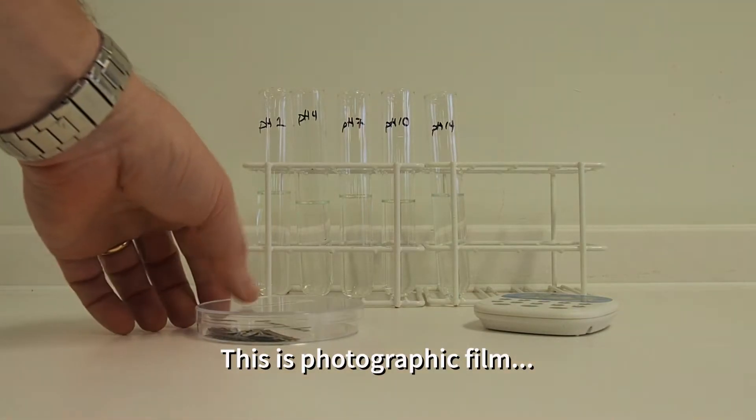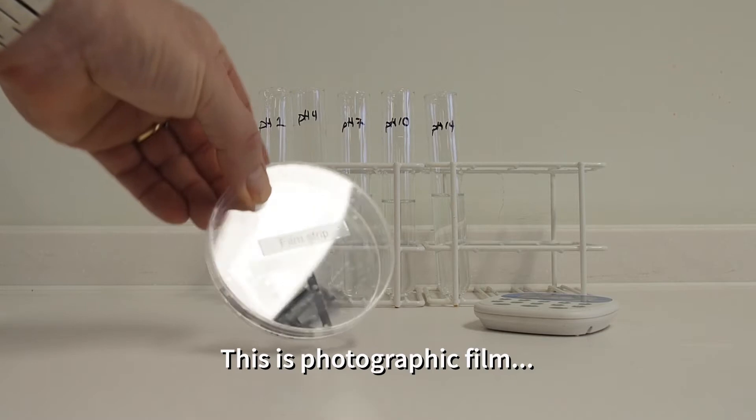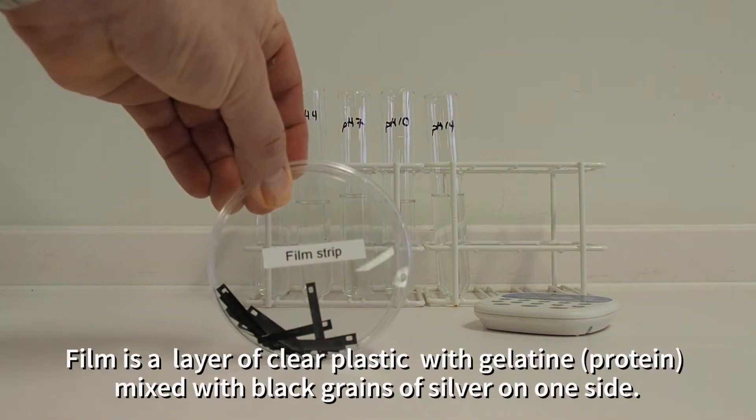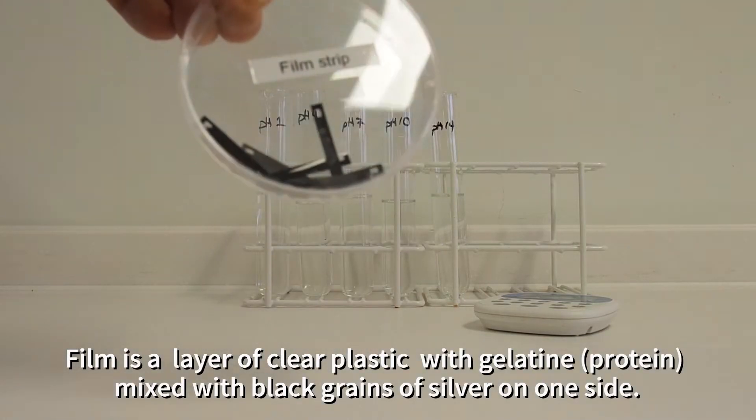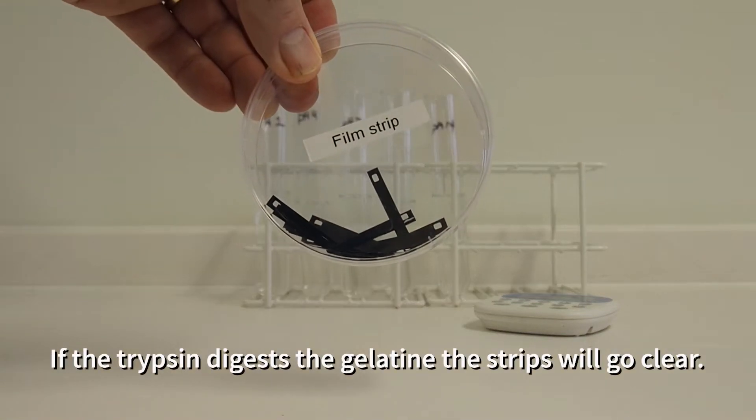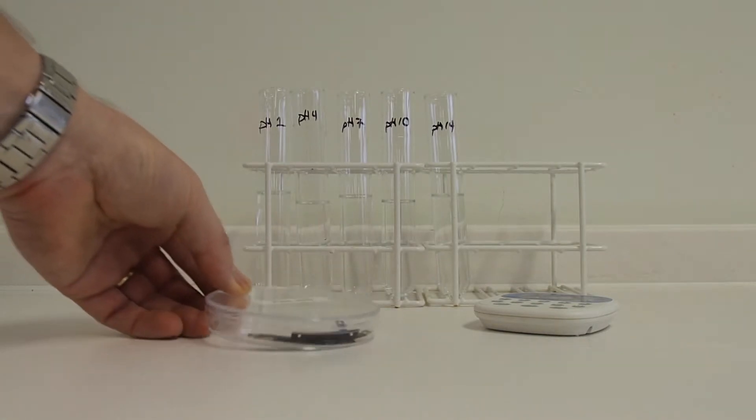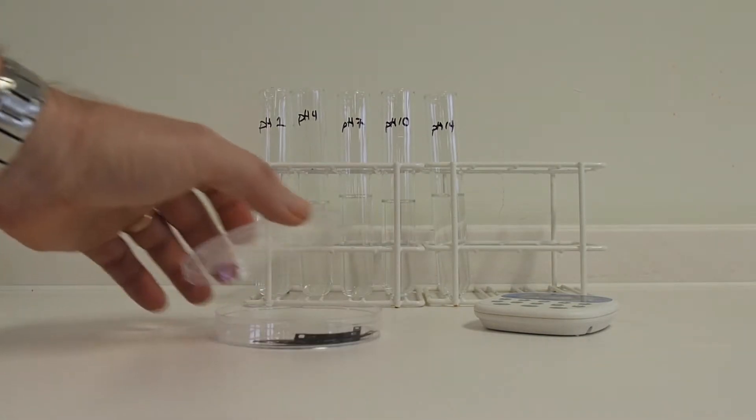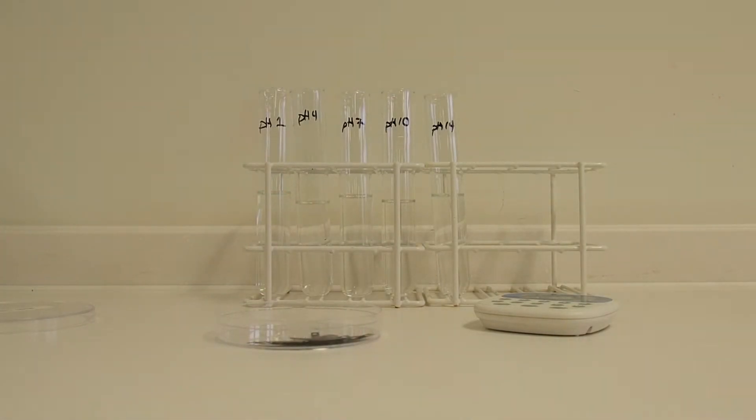So photographic film used in old cameras is a sheet of clear plastic, and on one side of the plastic there's a layer of gelatin protein which has got some black grains of silver incorporated in it. And if we digest the gelatin away using the trypsin enzyme, then the strips will go clear.